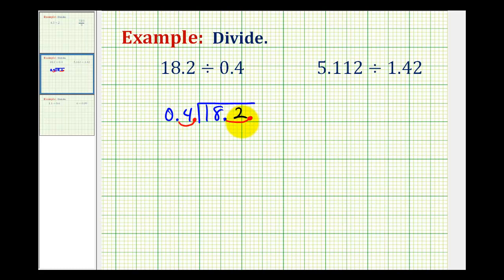So now we've changed the division problem to 182 divided by four, where the decimal point would now be here after the two, which we would then move up into our quotient. Now let's briefly talk about why this procedure works.